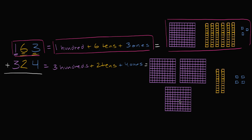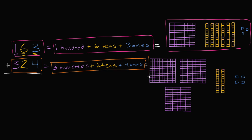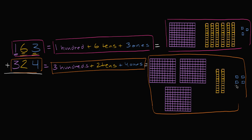You have three hundreds — one, two, three hundreds — two tens — one, two tens — and four ones. So this number, 324, is three hundreds, two tens, and four ones. And if you want to think about how many boxes it is, it's that many, and you see them. They are grouped into three groups of 100 — that's the three hundreds — two groups of 10 — that's the two tens — and then four ones.